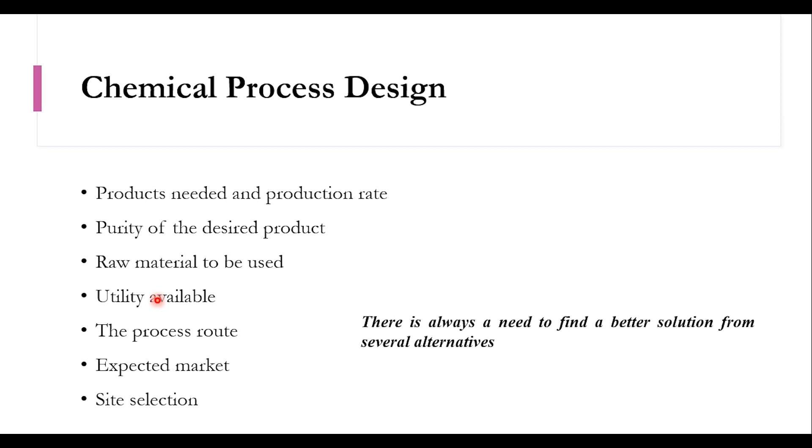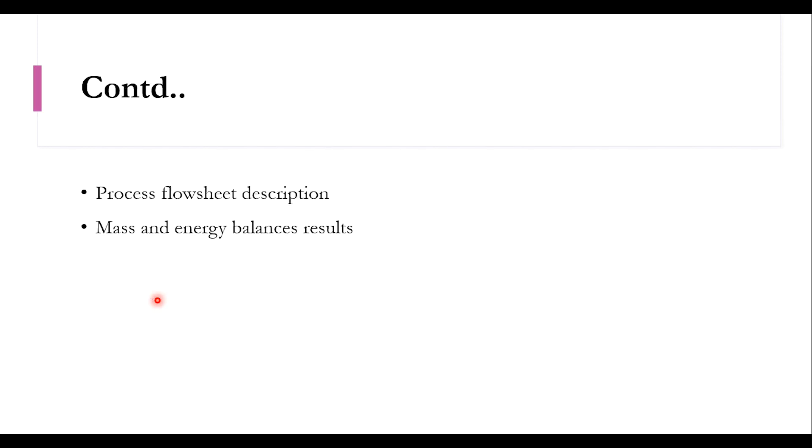However, this does not end there and there is always a need to find a better solution from several alternatives. Then again process flow sheet description, mass and energy balances results, equipment sizing and specification, economic feasibility analysis, environmental requirements and finally the final report. Obviously if you have done your FYDP, the Final Year Design Project, or if you are new to the FYDP you have to understand that all these aspects are included in your FYDP.